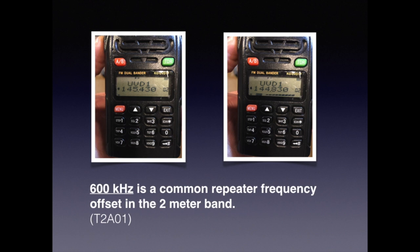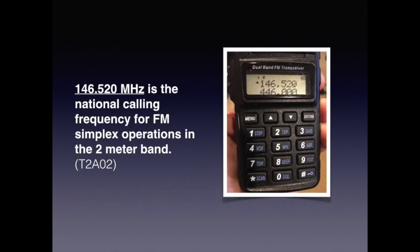One test question is: 600 kilohertz is a common repeater frequency offset for the 2 meter band. Another important operating mode is called simplex. Simplex is simply transmitting and receiving on the same frequency. If there's no particular person you want to talk to and you just want to talk to whoever's on the air, you could throw out your call sign on what's called a calling frequency. The test question is: 146.520 megahertz is the national calling frequency for FM simplex operations in the 2 meter band.